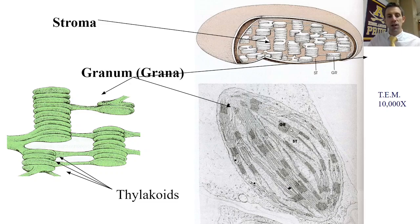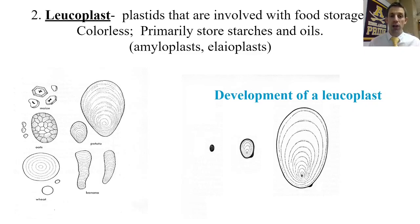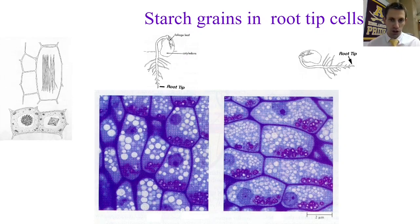The second type of plastid are leukoplasts, used for storage — primarily of carbohydrates and oils. A leukoplast that stores starch is called an amyloplast (since the chemical name for starch is amylose), while an elaioplast stores fats. Leukoplasts are common in potato cells. When iodine is added to potato cells under a microscope, you can see all the starch storage turn that dark purplish-black color — a great example of where plants store excess starch.